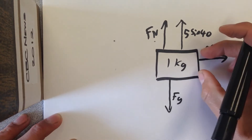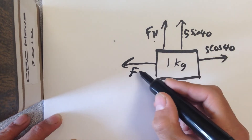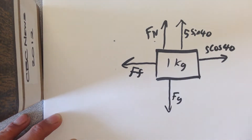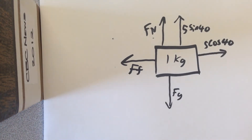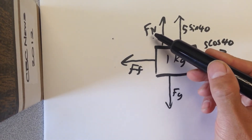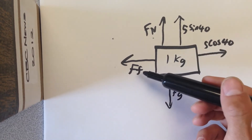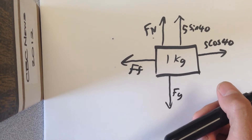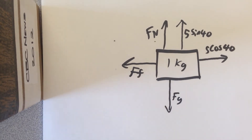Because the block is being pulled forward, there will be friction pulling back. Our goal is to find the net force on this block and then determine its acceleration. To start, we need to find the normal force, then use it with the coefficient of friction to determine the force of friction. From there, we can determine the net force and in turn the acceleration.